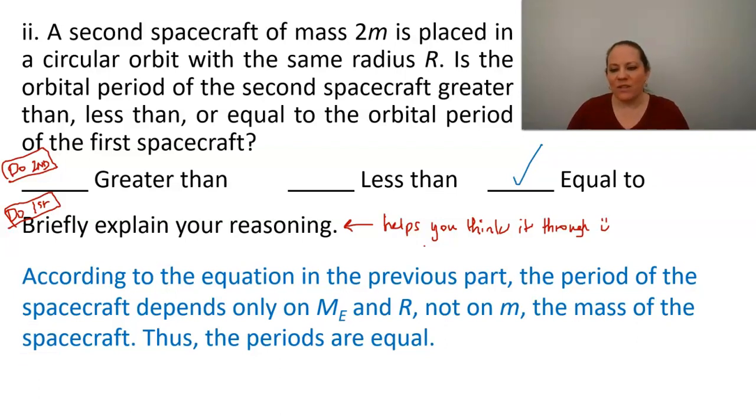And scoring for this one, you're going to get just one point for a correct explanation that t depends only on m, e, and r, or you could say that t does not depend on m. Or, you can also get credit here for an explanation consistent with your answer to part B1.